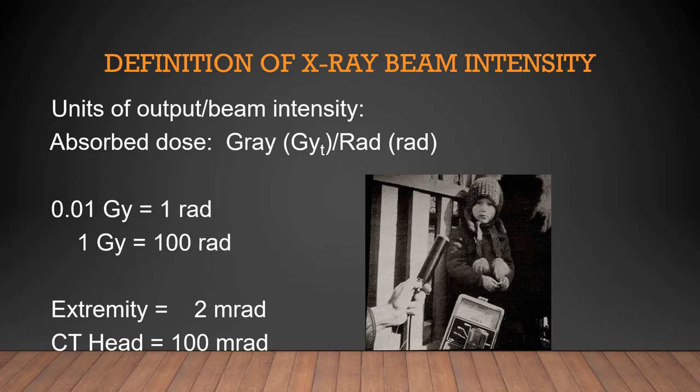A chest X-ray is going to be about 3 to 8 millirad — maybe 3 for the PA chest and 8 for the lateral. Any time you take an exposure, like a 3-view of the hand, it would be 2 plus 2 plus 2, so the patient would receive 6 millirad with 3 views of the hand.